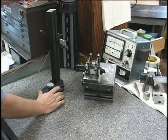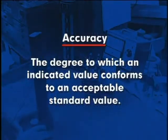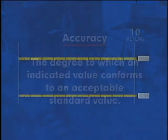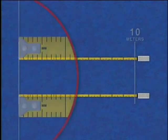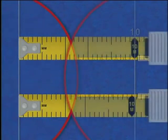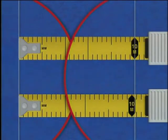Accuracy is defined as the degree to which an indicated value conforms to an acceptable standard value. For example, two tape measures may both have the same resolution or graduation — in this case, millimeters. However, if these tape measures are not equally accurate, their differences become more noticeable at greater lengths.